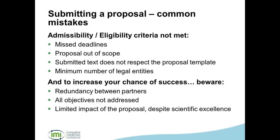If the proposal is out of scope it will not be considered, so make sure that you submit it to the right topic. You need to respect the proposal template and make sure to include all the relevant sections. The minimum number of legal entities — three from three different European or associated countries — needs to be respected. To increase your chances of success, make sure there is no redundancy between partners, that all relevant expertise is included, that all objectives are addressed, and focus on the impact of the proposal.